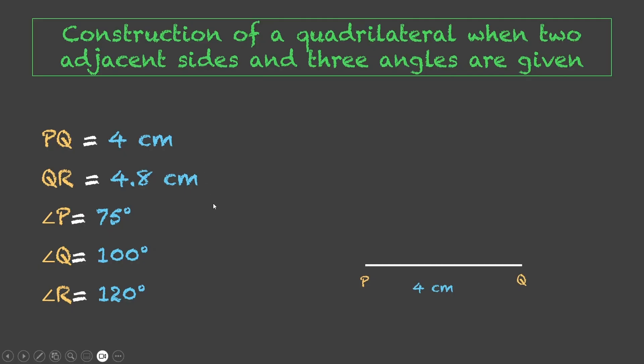Let us pick PQ for now. If you notice at Q we need to construct an angle of 100 degrees, and then we can draw QR which is 4.8 centimeters.